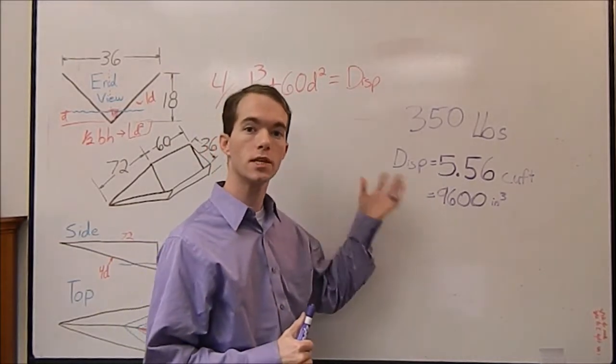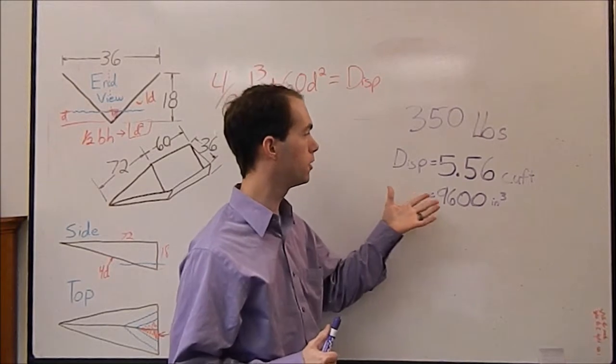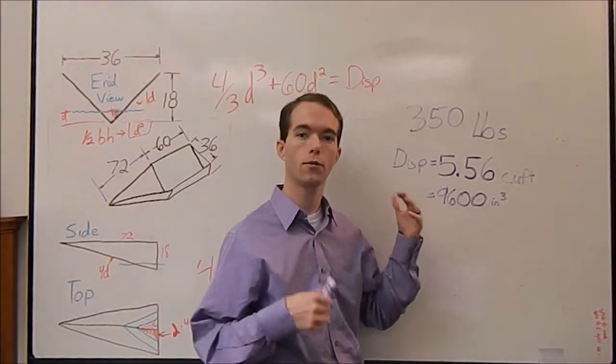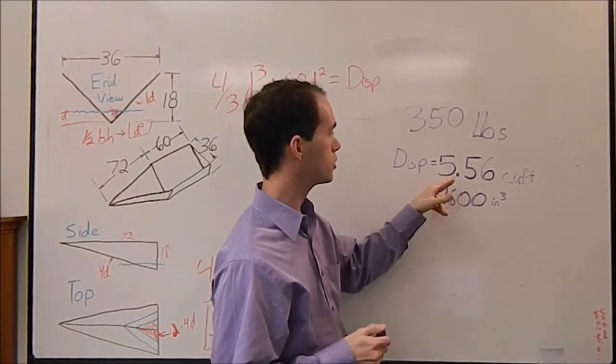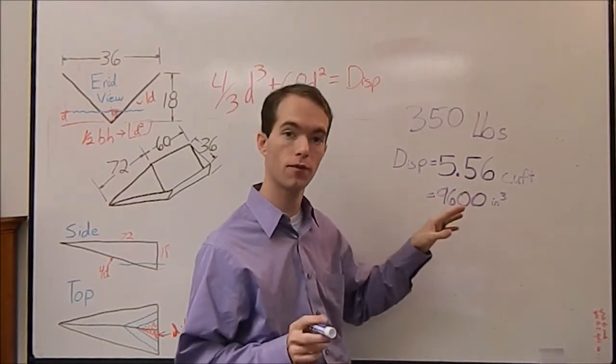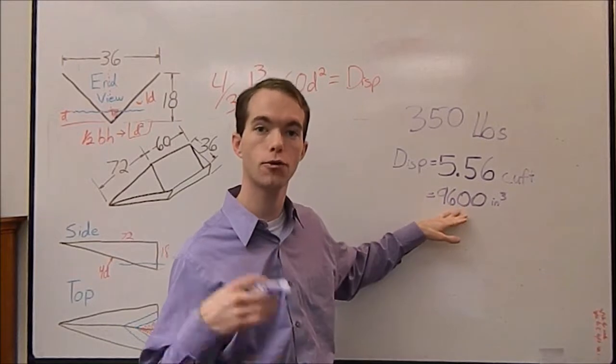I'm working an example now. So let's say you've got a couple of buddies in your boat. You're going to weigh 350 pounds total. With 350 pounds, we're going to use 63 as our density of water. 63 pounds per cubic foot means you need to displace 5.56 cubic feet. We need this all to be in inches, so that's 9,600 cubic inches.